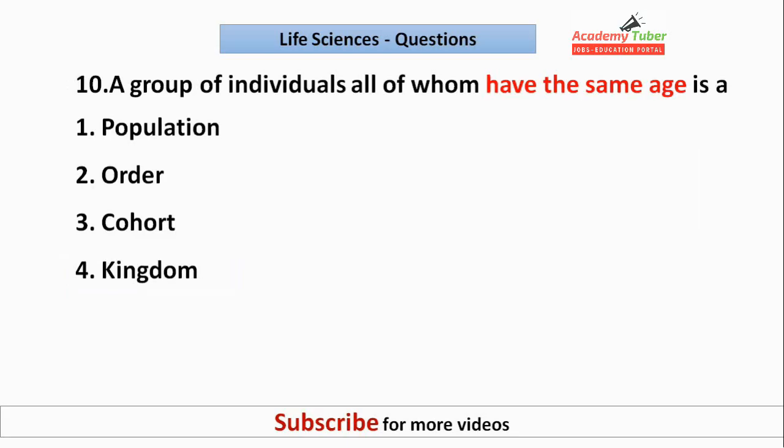A group of individuals all of whom have the same age is called a? The answer is cohort.